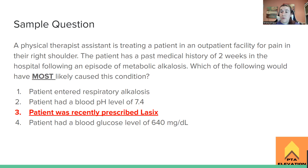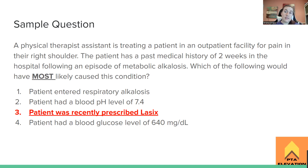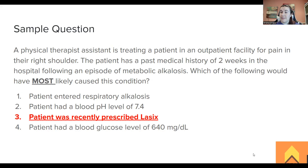Patient had a blood pH of 7.4 — our normal range is 7.35 to 7.45, so that patient is perfectly normal. A normal blood pH would not cause metabolic alkalosis, so number two is incorrect. Patient had a blood glucose of 640 — that is really high, causing hyperglycemia, which leads to diabetic ketoacidosis. High blood glucose is associated with metabolic acidosis, not alkalosis. I hope this helped explain these two conditions, which can be a little confusing.